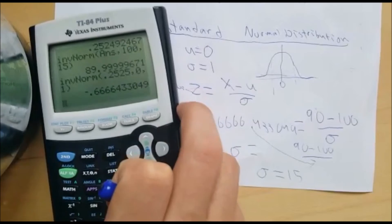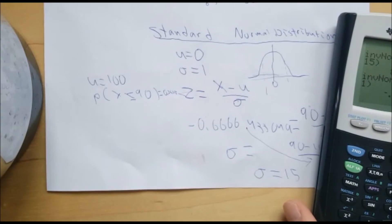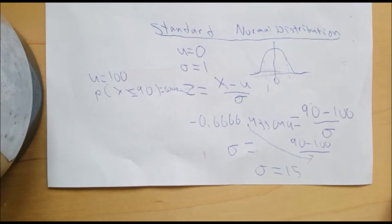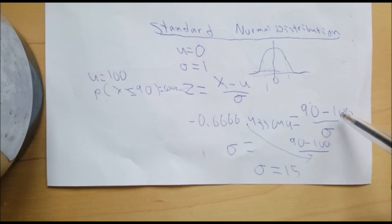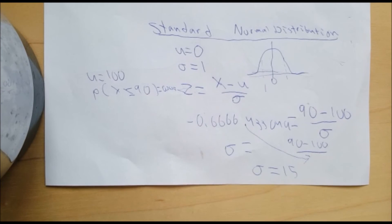I said it was 0.2525. But that's how you can find either standard deviation. If you knew the standard deviation and not the mean, then you could have just solved for the mean right here.